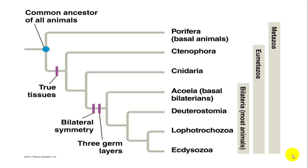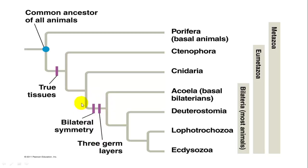Some of our main traits include true tissues, which are part of our eumetazoans. Metazoans include porifera, and their common ancestor has a cell type similar to choanocytes. We have bilateral symmetry and three germ layers — triploblastic — in our bilaterians. Cnidarians and ctenophores have diploblastic development; we're just going to talk about cnidarians in this class.